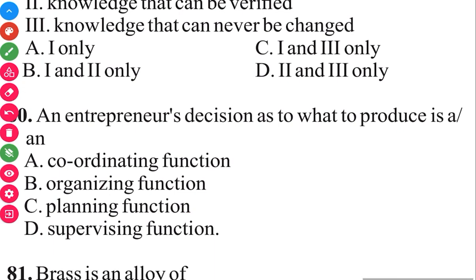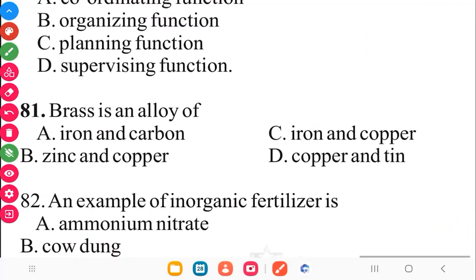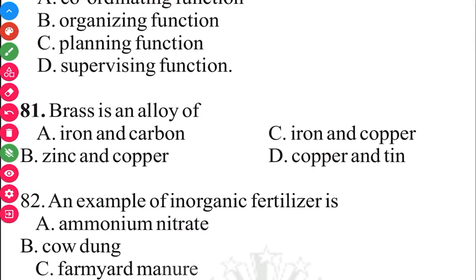Question 81. Brass is an alloy of zinc and copper. The correct answer is B, zinc and copper.